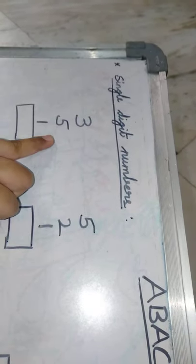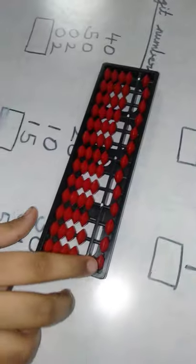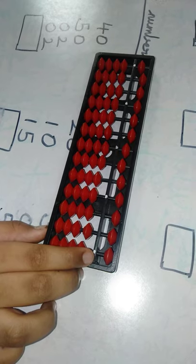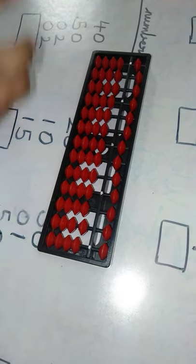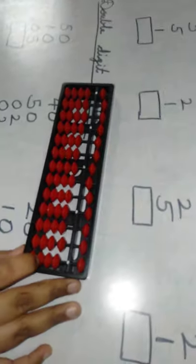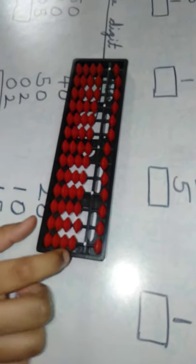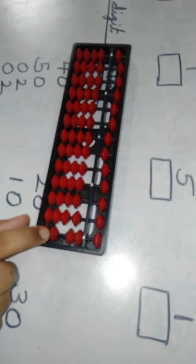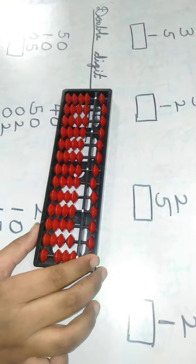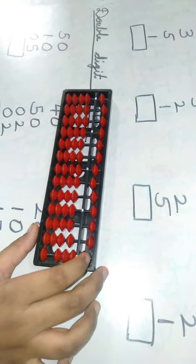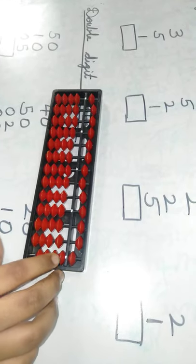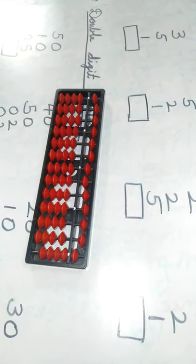Now let's do this problem. For a single digit number we have to use one column. Here we have 3 — we have to move 3 beads in the 1's place: 1, 2, 3. Plus 5 — we have to move the upper bead in the 1's place, which is 5. Plus 1 — we have to move a lower bead. The total answer is 9. We have to write here 9.